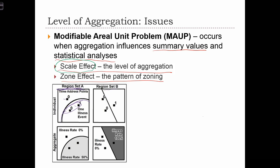When we aggregate the data, we give an average illness rate for the two different zones. In the zone outside the circle, we only had one observation and this person was not ill, so the illness rate in this zone was zero percent. In the internal zone, the illness rate was 50 percent, because we had two people — one was ill, one was not.